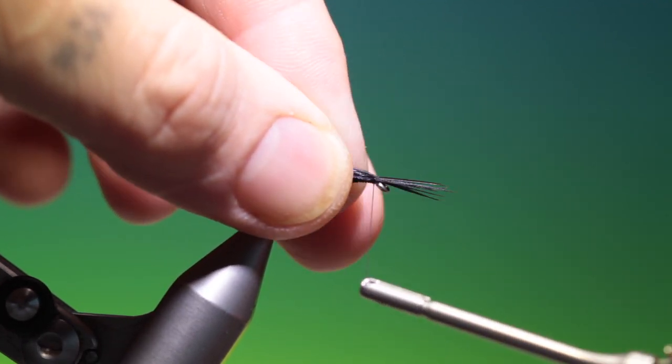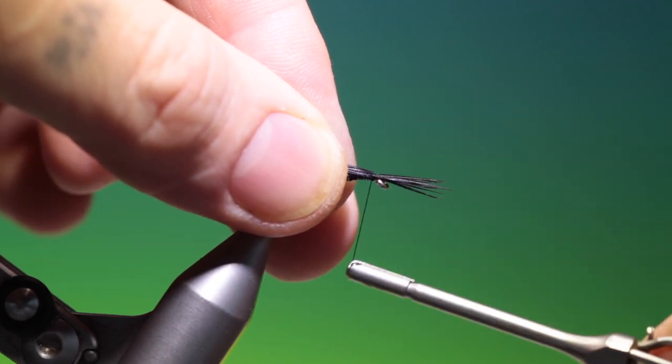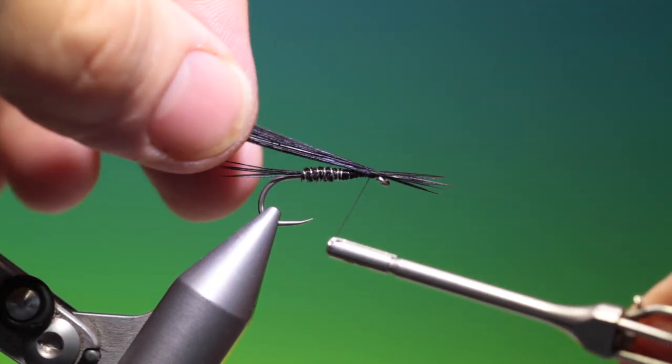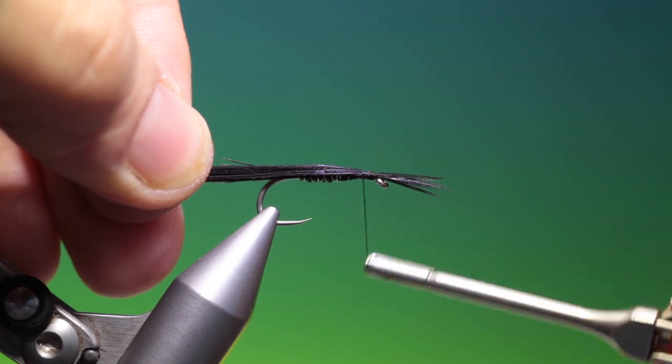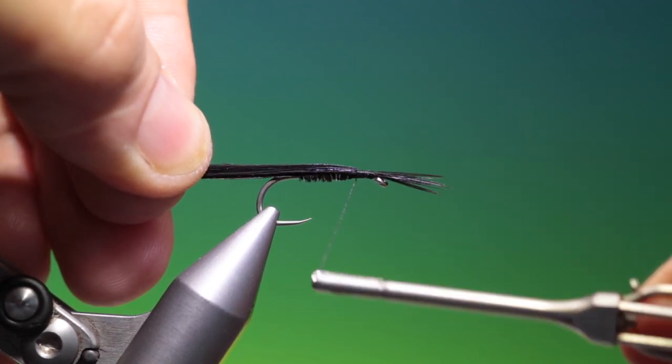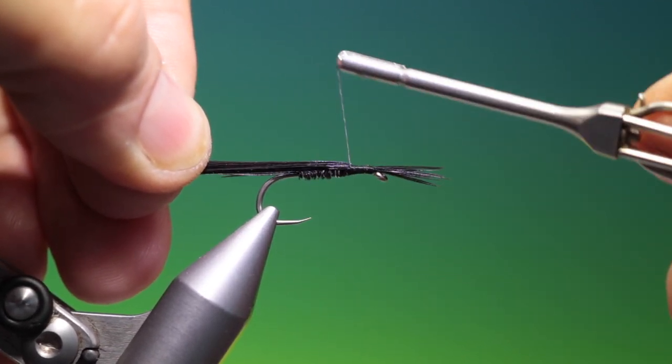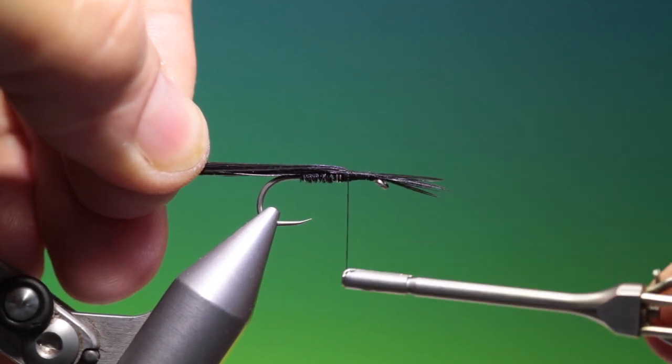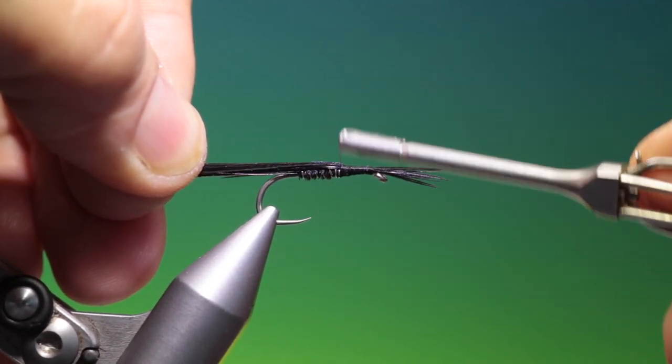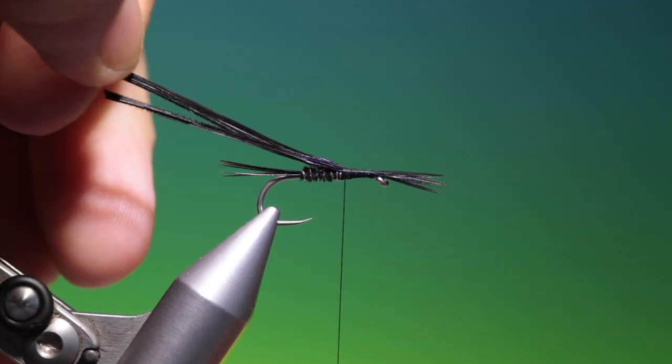Right in beyond the eye and keep it on top of the hook shank. Flatten out the pheasant tail fibres now as we go back towards the abdomen. And this is going to be the wing case. Like so.